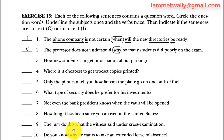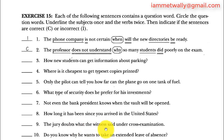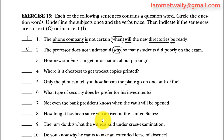Sentence 9: 'The jury doubts what the witness said under cross-examination.' 'The jury' is the subject, 'doubts' is the verb. 'What' is a connector; 'the witness' is the subject and 'said' is the verb. The subject and verb are in the correct order after the connector, so the sentence is correct.